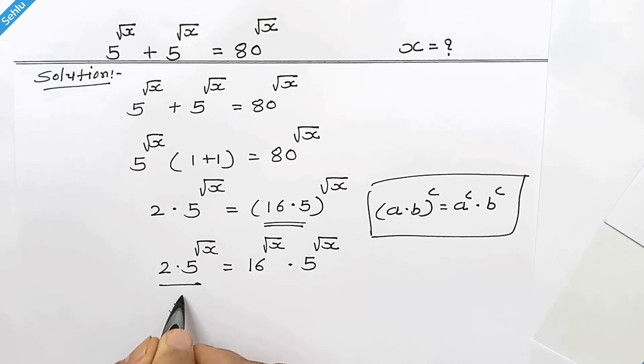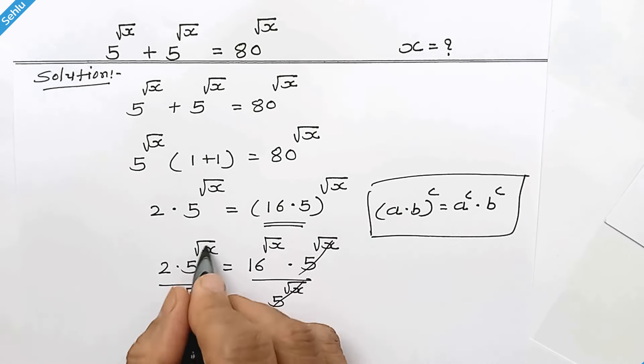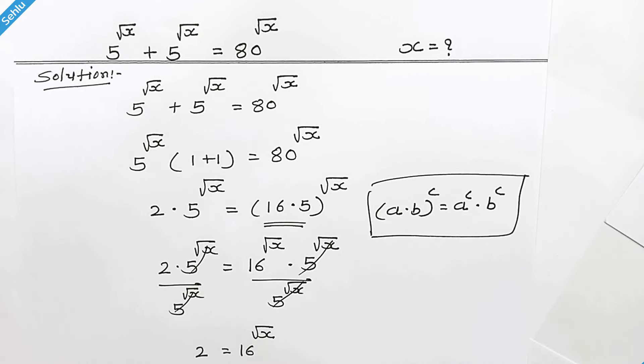Now if we divide with 5 to the power square root of x both the sides, this 2 and this 2 will be cancelled. So what remains is 2 is equal to 16 to the power square root of x.